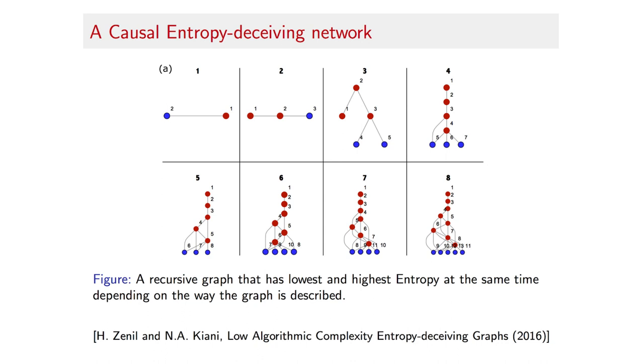As it turns out, this simple algorithm determines a unique graph and constitutes a method that can be used to build a family of recursive graphs with maximal entropy but low algorithmic complexity. That is, graphs that appear statistically random but are of low algorithmic randomness and thus causally or recursively generated just like this one.